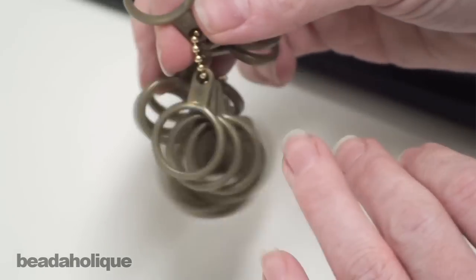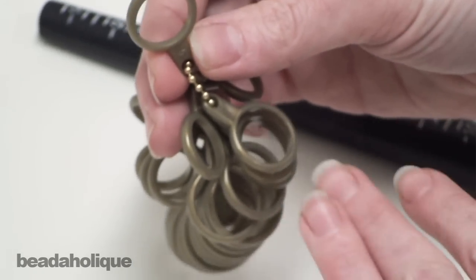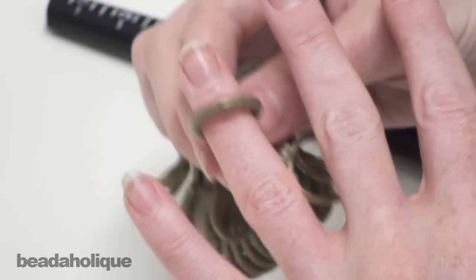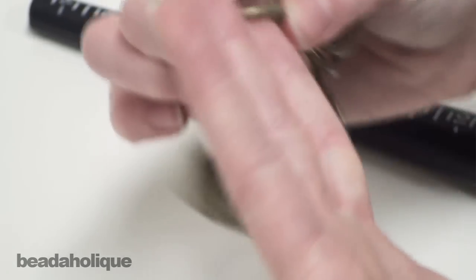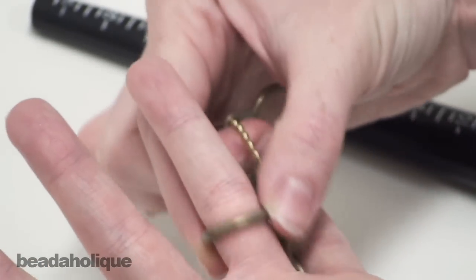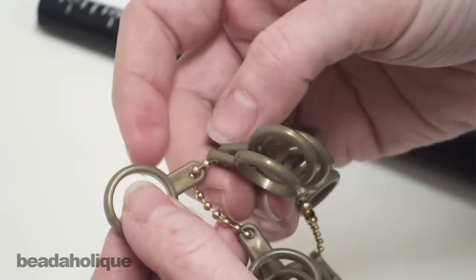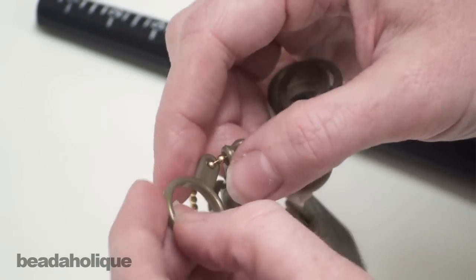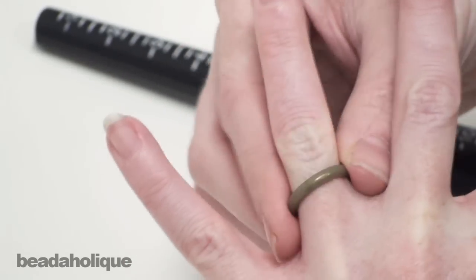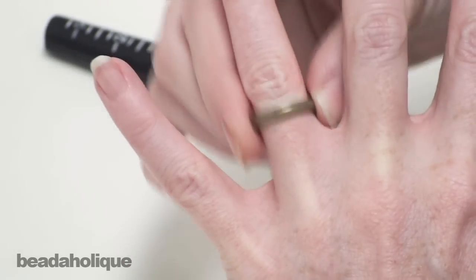The average person's ring finger is about a size six to a seven. I know my fingers are a little bit smaller, so I'm going to start with a five. It fits but it actually feels a little bit loose because you don't want it to slip off. So then I'm going to go down a half a size to a four and a half. That actually feels pretty good.